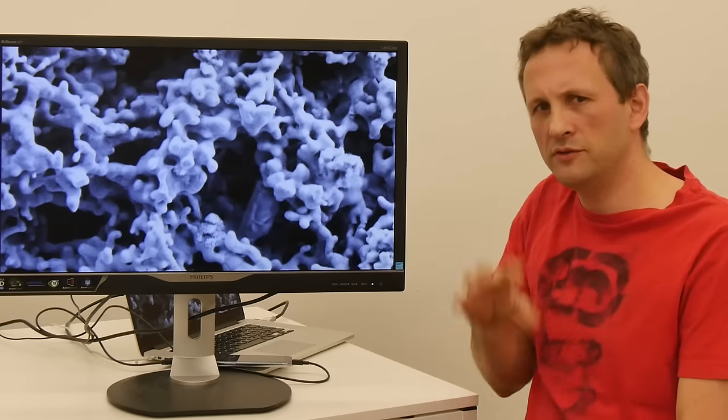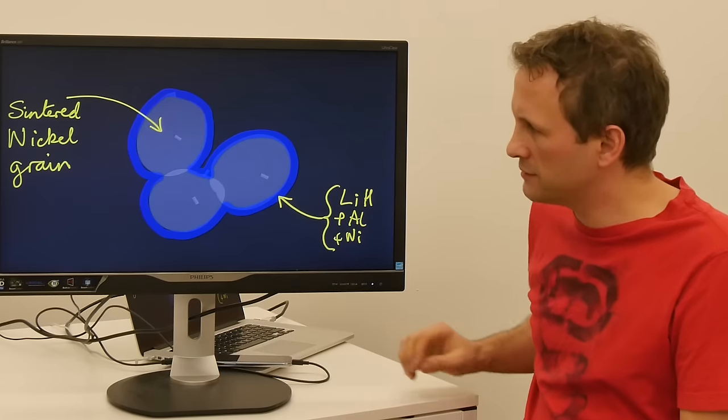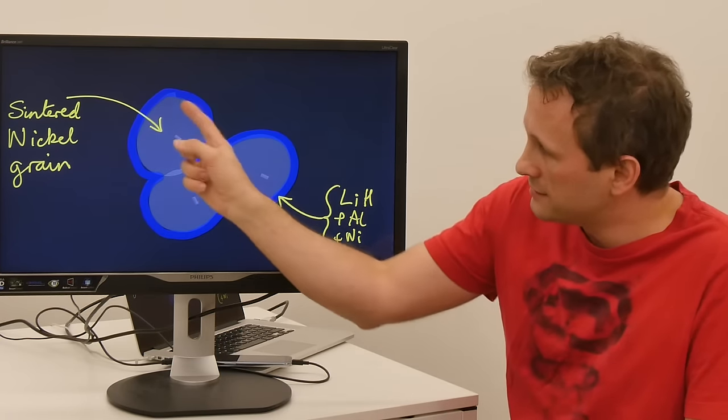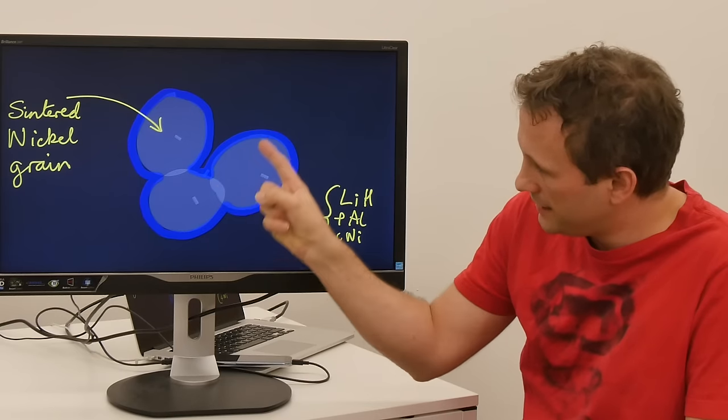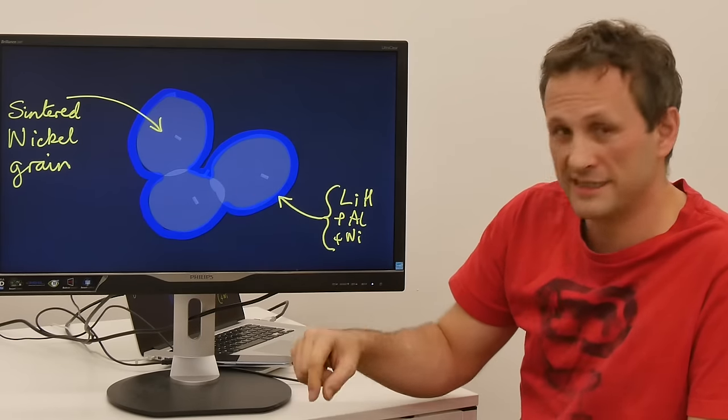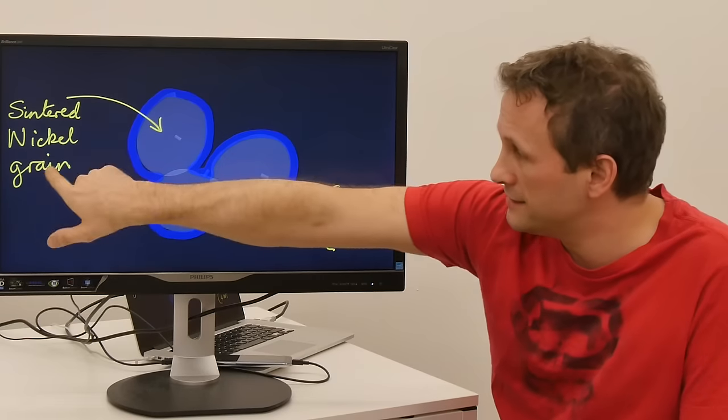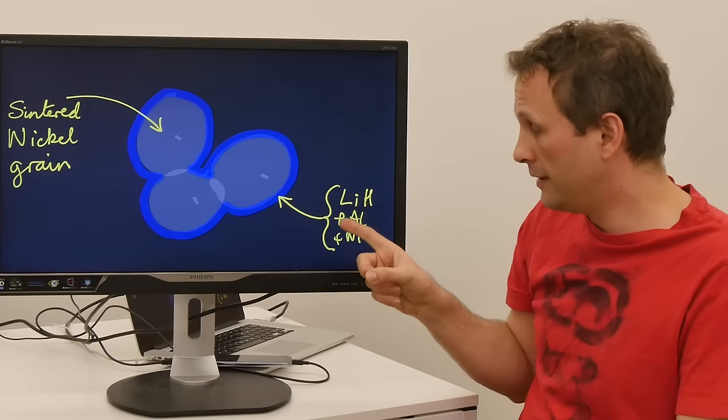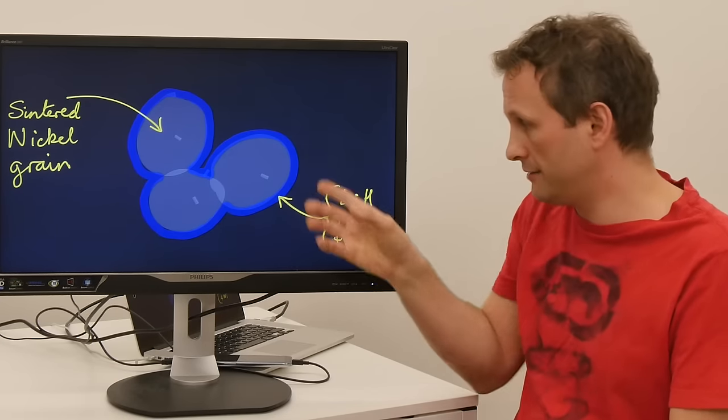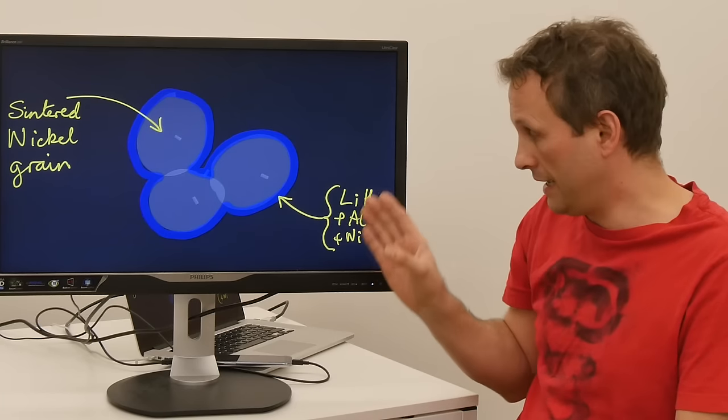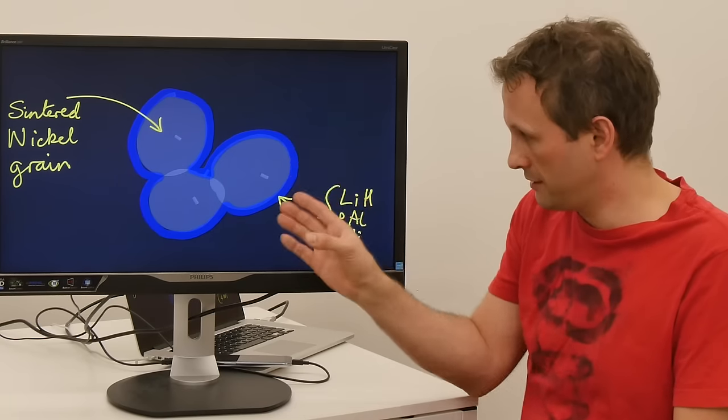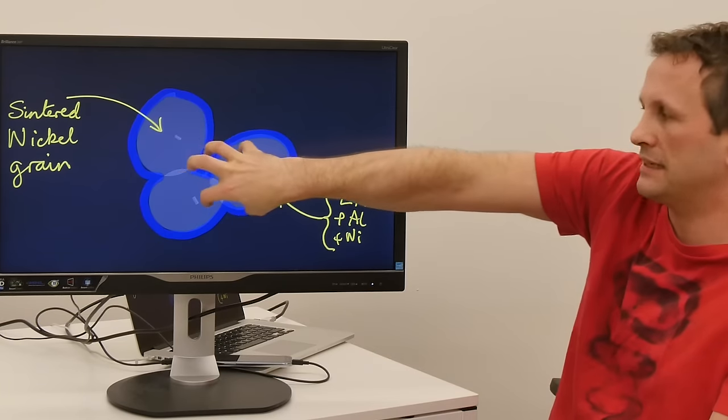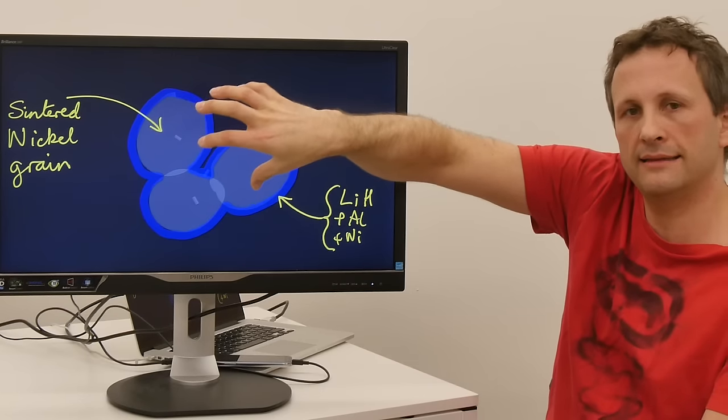So what does this look like when you take a schematic of it? So I drew this little picture here. And what we have is our sintered nickel grains here. These are the sintering points. Sintered nickel grains. And then over here on the outside we have lithium hydride plus aluminum plus nickel in the lithium and aluminum solution that's frozen onto the surface of the nickel. So it's effectively encapsulating the nickel.